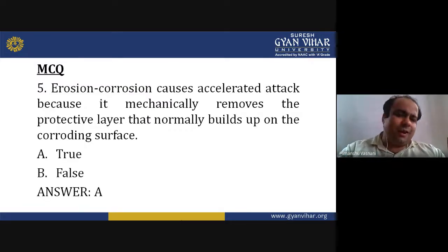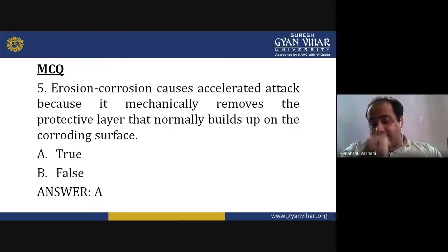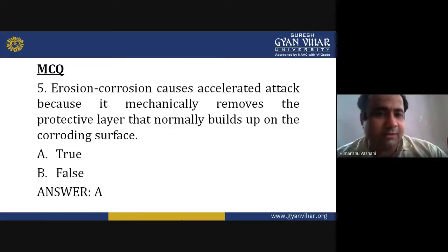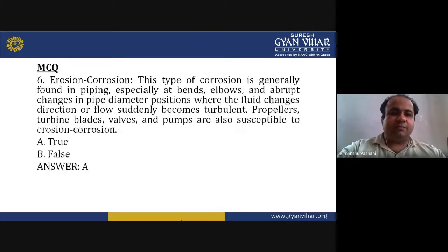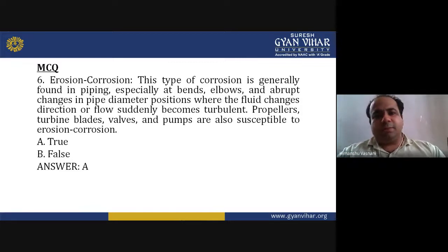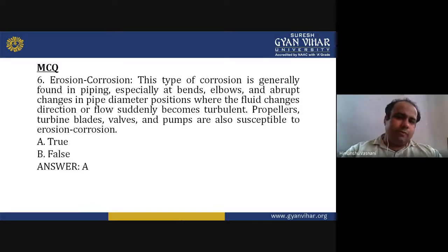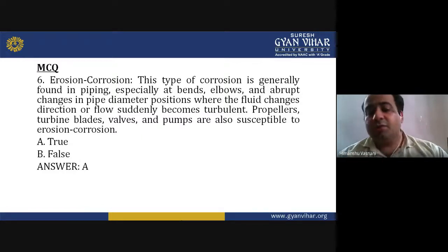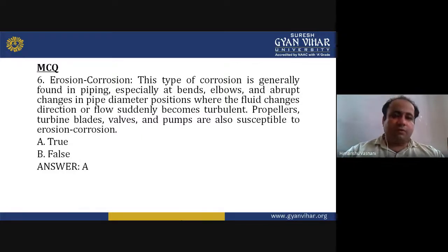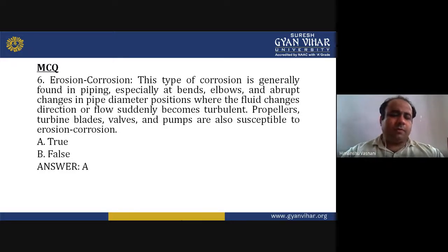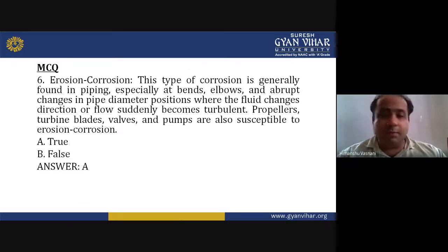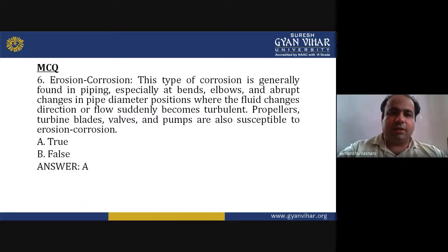Erosion corrosion causes excessive attack because it mechanically removes the protective layer that normally builds upon the cold surface — True (A). Erosion corrosion is generally found in piping, especially at bends, elbows, and abrupt changes in pipe diameter; propellers, turbine blades, walls, and pumps are all susceptible to erosion corrosion — True (A).